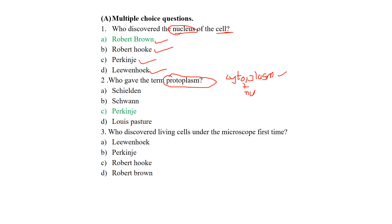The next question: who discovered living cells under the microscope for the first time? This is about living cells — cells that are already alive, seen under the microscope. The correct answer is Leeuwenhoek, who first discovered living cells under the microscope. I hope these three questions with their answers are now clear to you.